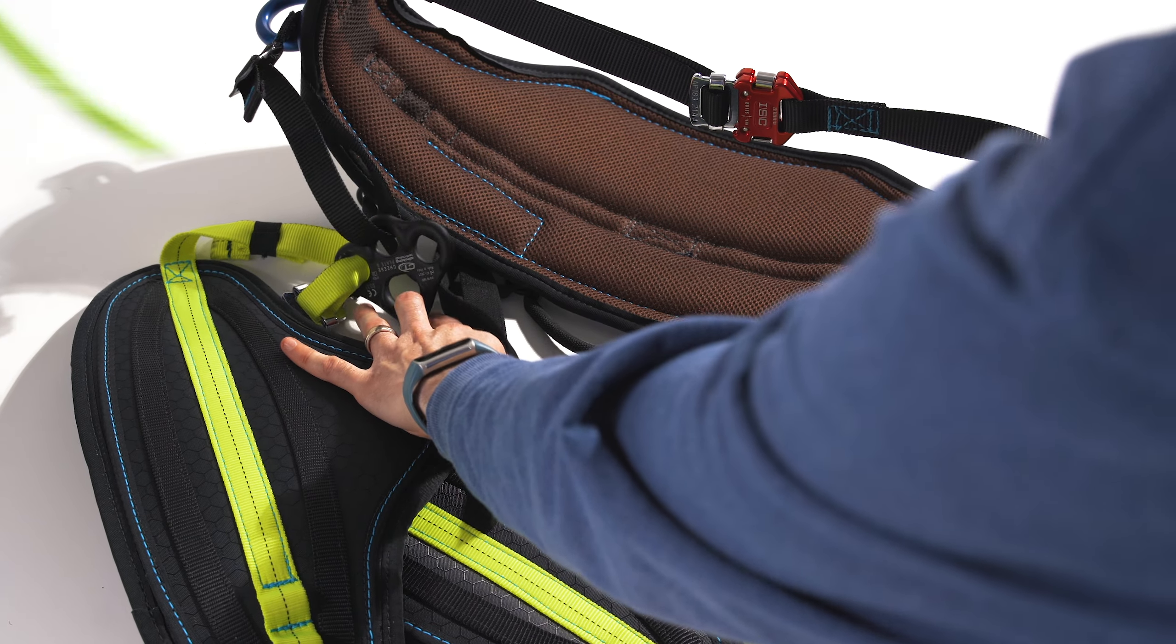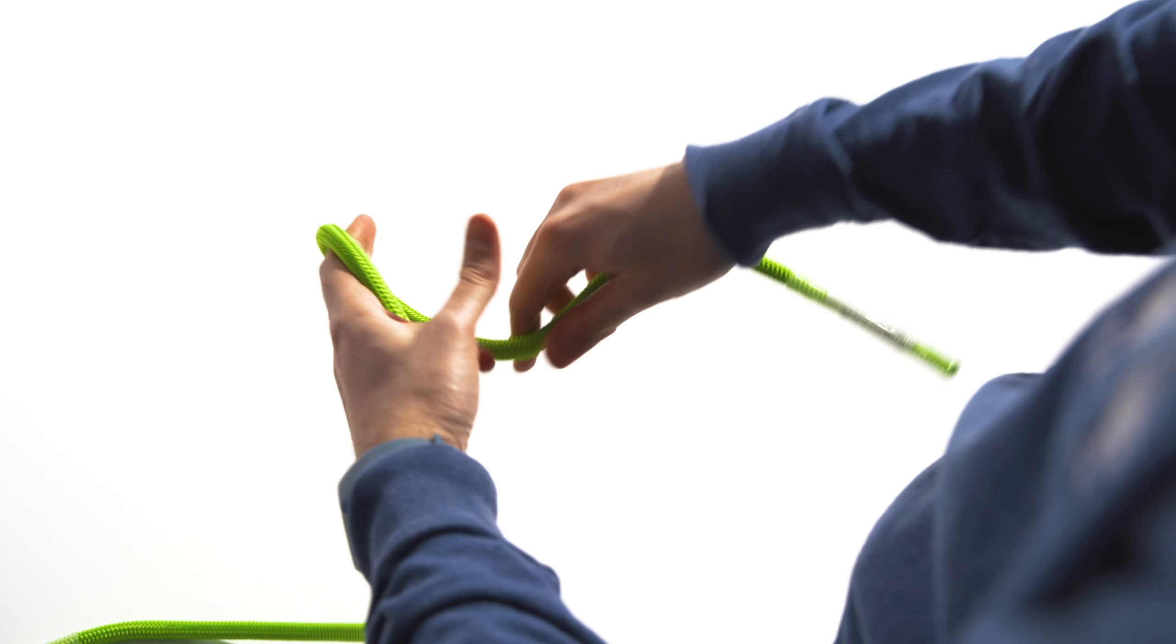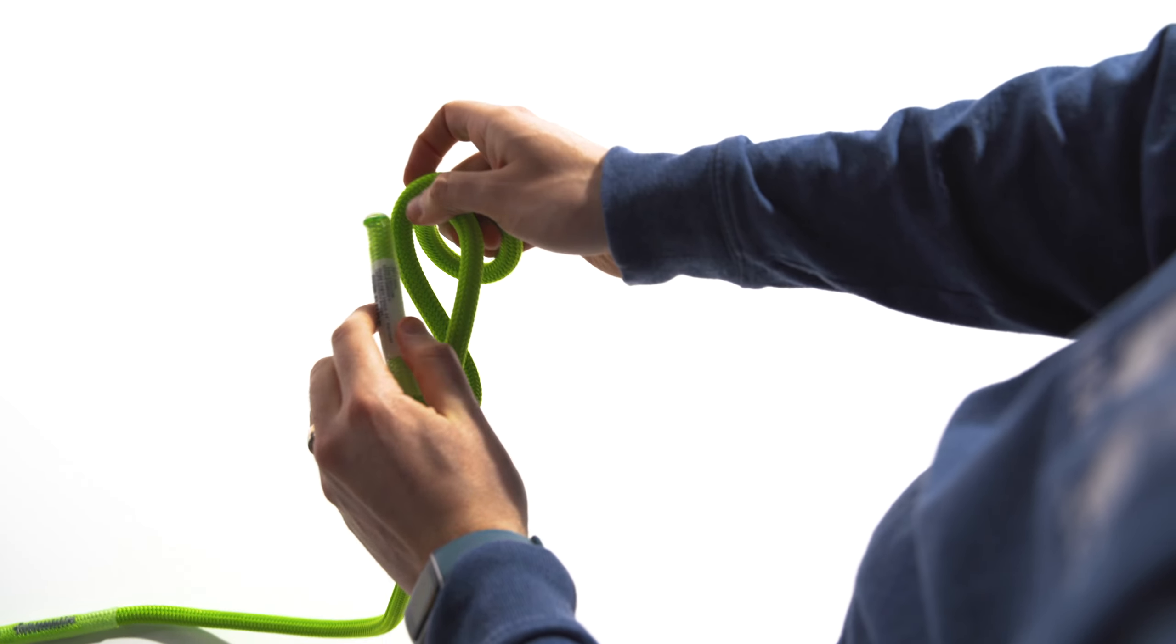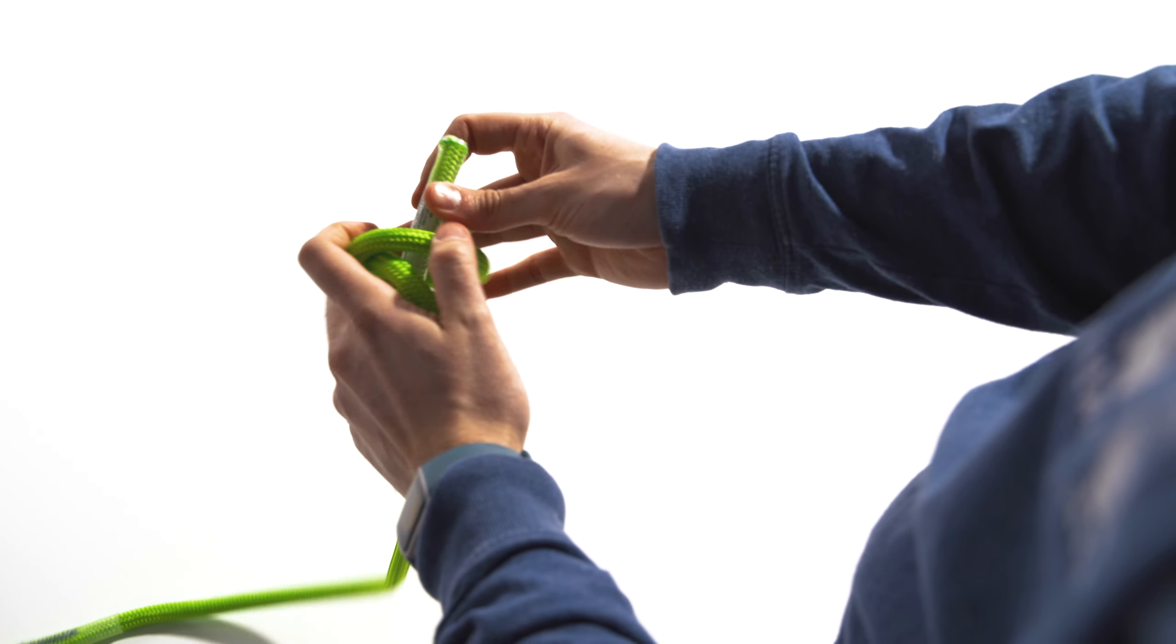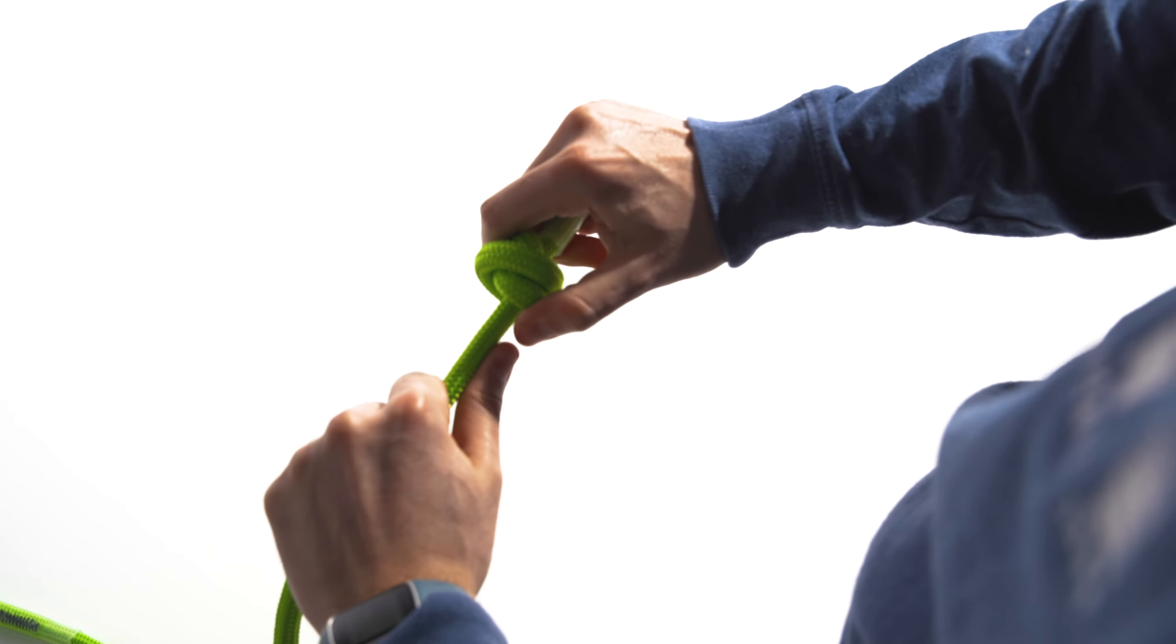Then tie a double overhand stopper knot on one end of your new rope bridge. To tie a double overhand stopper knot, loop the end of the rope around itself twice to form an X. Push the rope end through the two loops you made, and then pull it tight. The rope's plastic tip should be outside the knot and completely visible.